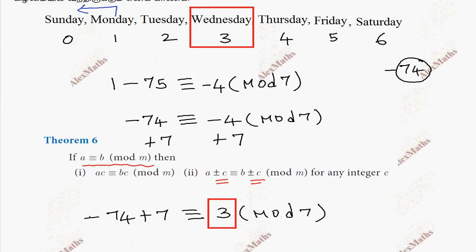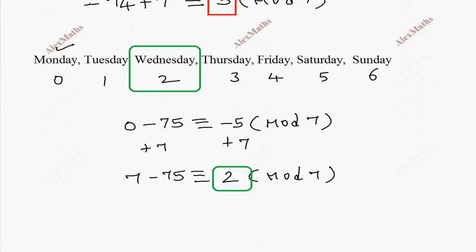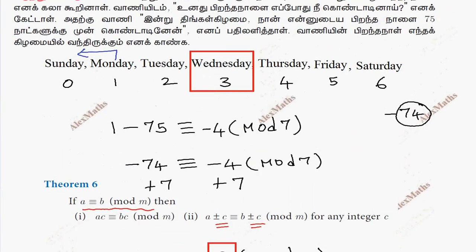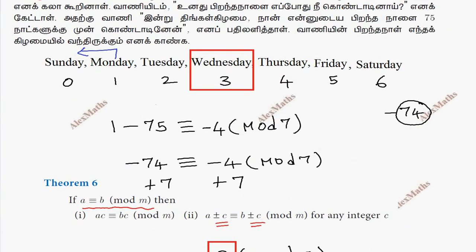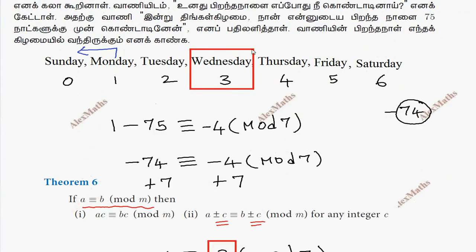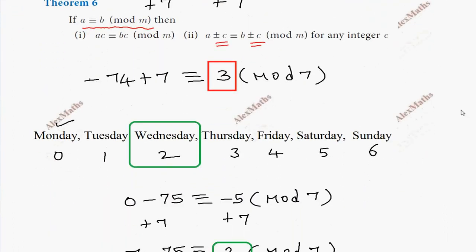So this is Sunday 0. The answer is 3, and 3 is Wednesday. So from Sunday 0 to 6, the answer is day 3, which is Wednesday — that is the day Vani celebrated her birthday.